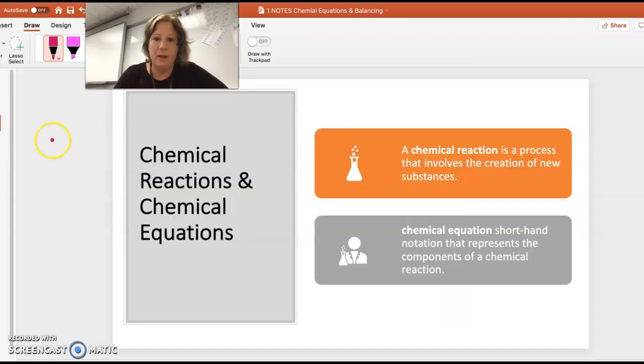A chemical reaction is the process where you chemically change something into a new substance with different chemical composition and different properties. A chemical equation is just the shorthand notation of showing that.